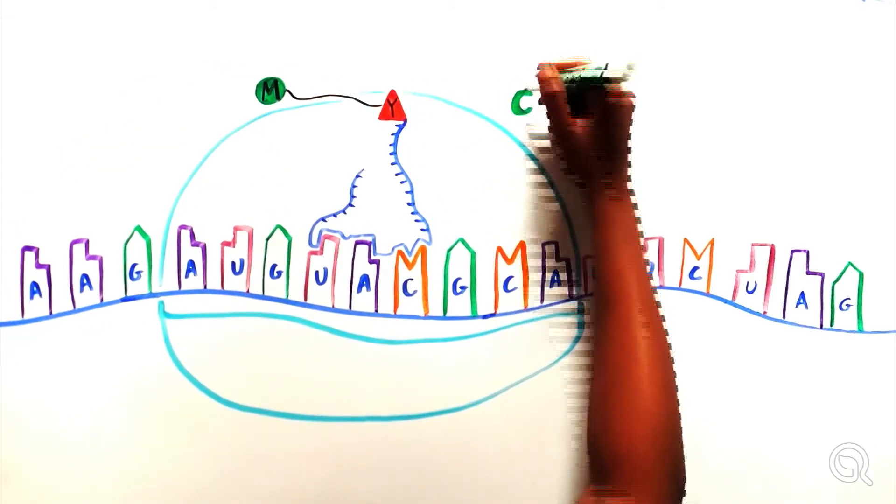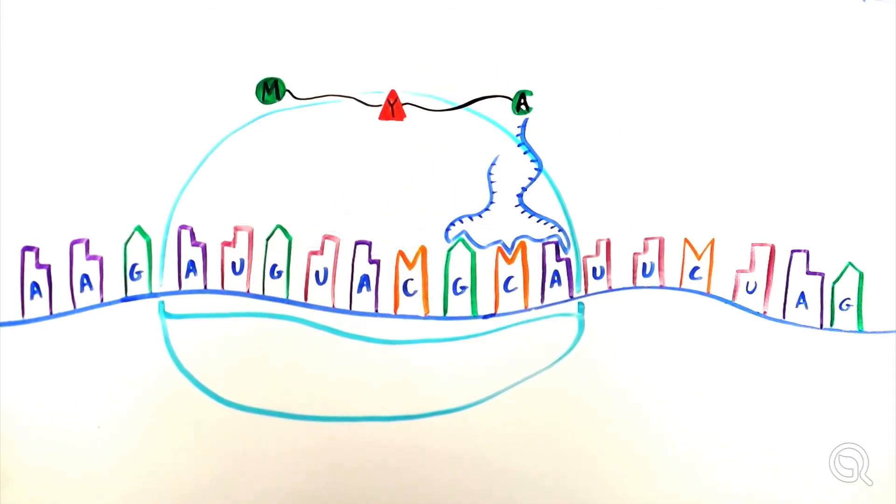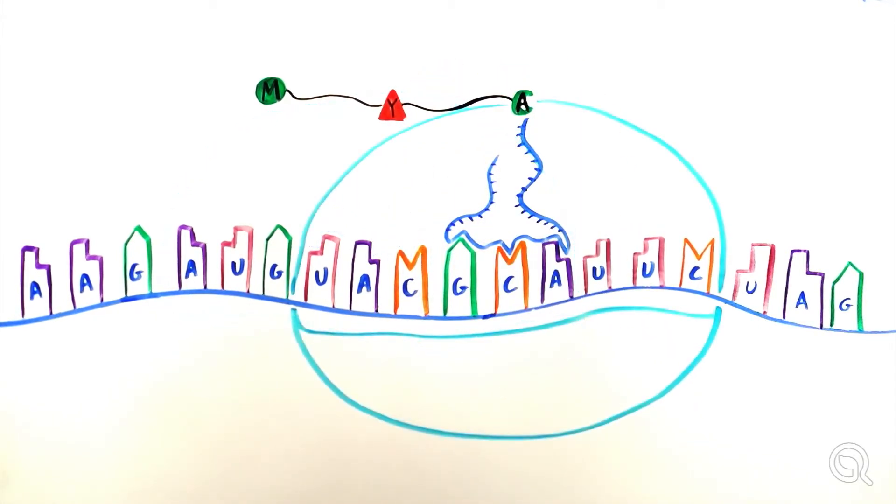The process of attaching the amino acid to the previous one in the chain disconnects the tRNA from the amino acid, and the naked tRNA leaves the ribosome. And the process continues.